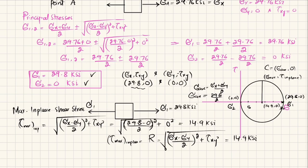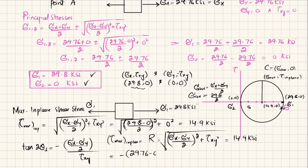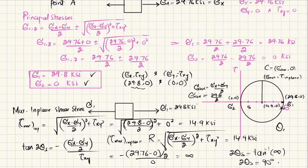For the orientation of maximum in-plane shear stress: tan(2θ_s) = −(σ_x − σ_y)/2 / τ_xy = −(29.76)/2 / 0 = −∞. Therefore 2θ_s = 90°, giving θ_s = 45° or −45°.